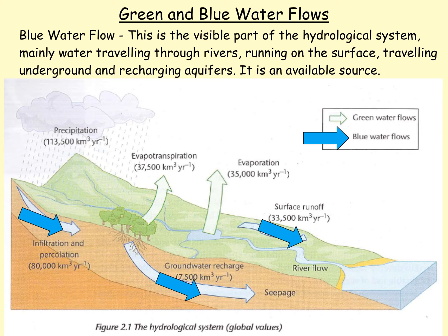When we talk about blue water flows, this is talking about the available source of water — it's much more available to us. If you think about this in terms of surface runoff and percolation into the rock strata, infiltration into the soil, and also groundwater recharge — we have these flows going across the surface and under the ground. We obviously get to use these sources in order to keep ourselves alive, because water is important and we can't live without it.